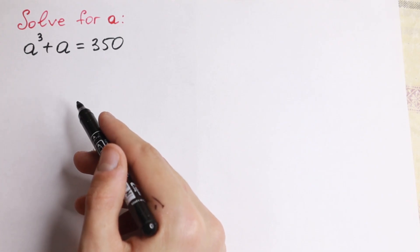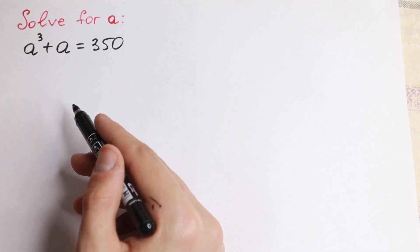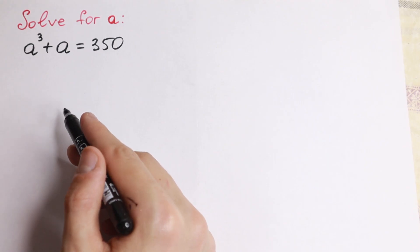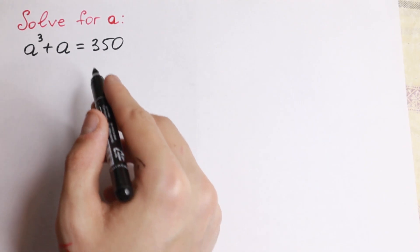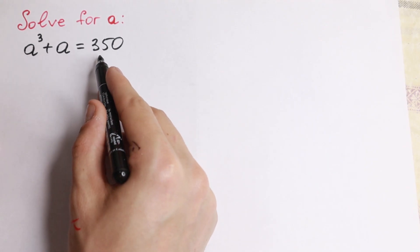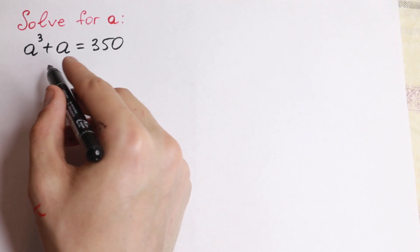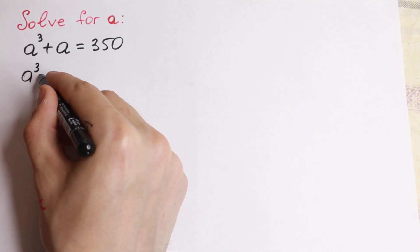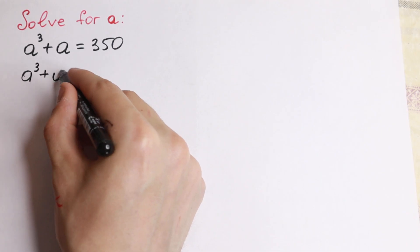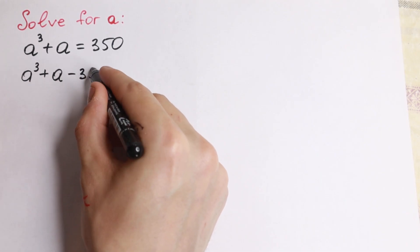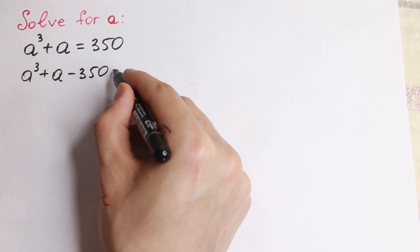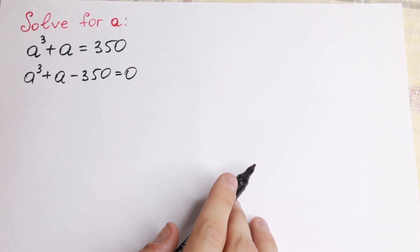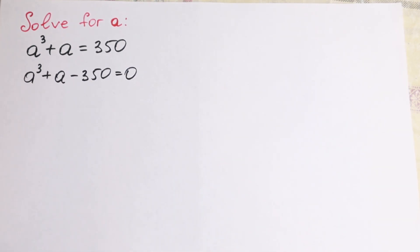There are a lot of methods how we can solve it — with a formula, with different approaches — but I want to show you a real quick method. First of all we need to bring this 350 on the left hand side. We will have a cube plus a minus 350 equal to zero.